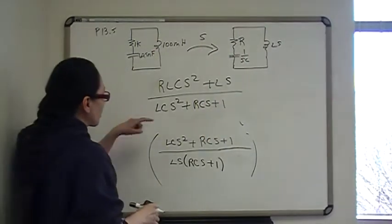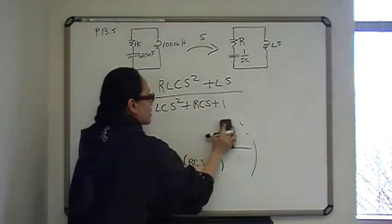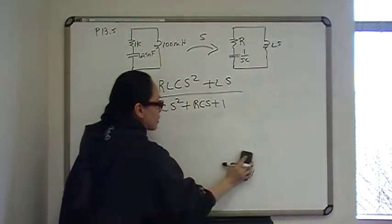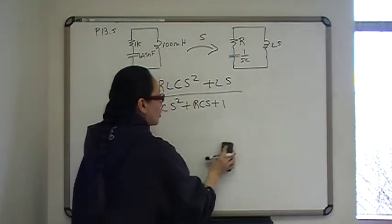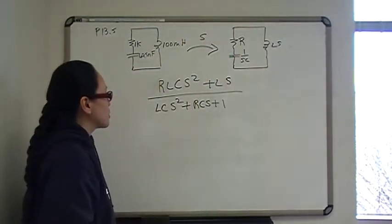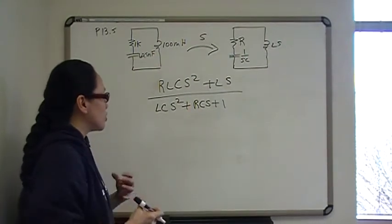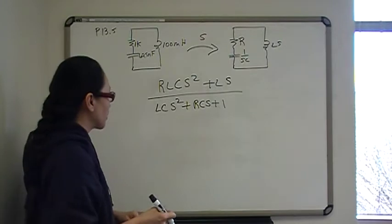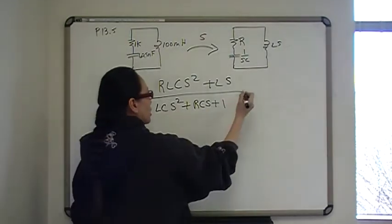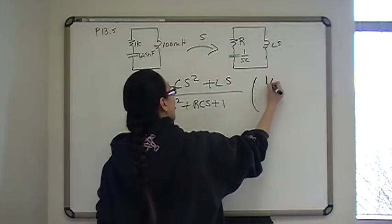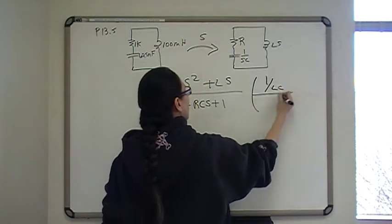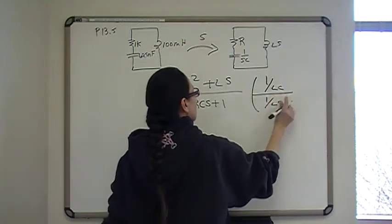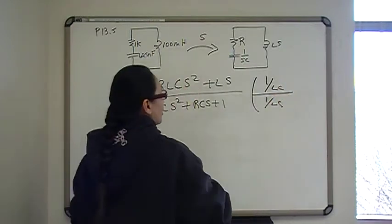Now we're going to force a 1 coefficient in front of the S squared, and that has to do with down the line that you will need to use inverse Laplace transforms, and you'll be doing factoring. And so you want a 1 coefficient when you factor. So we're going to force a 1 coefficient on here. That's going to be 1 divided by LC over 1 divided by LC. So multiplying top and bottom by 1 over LC will do that.